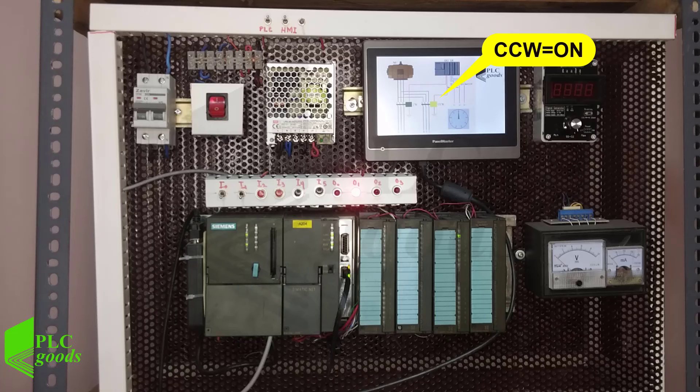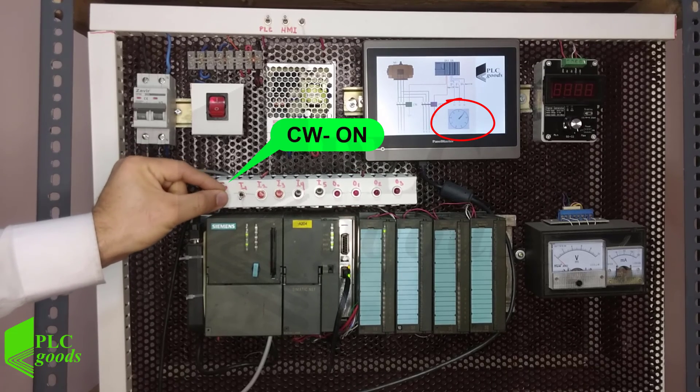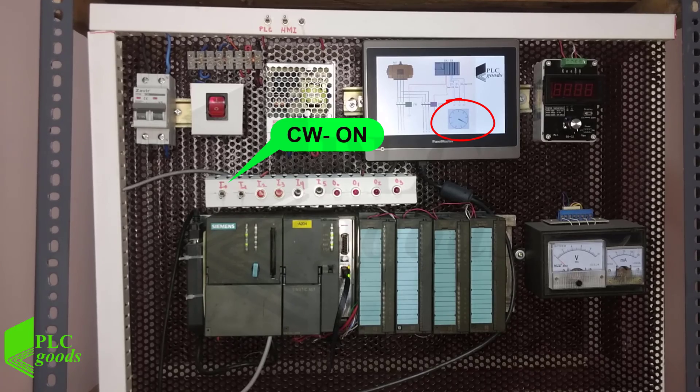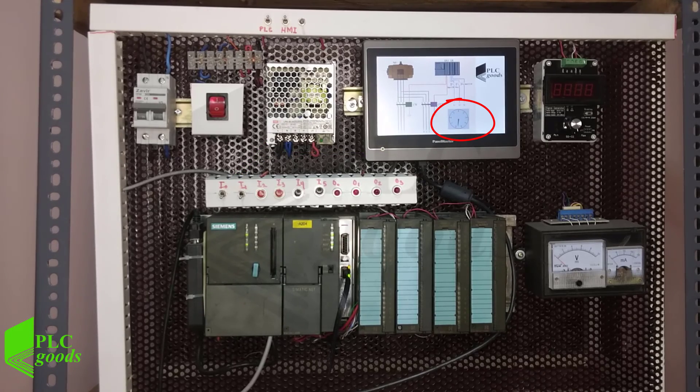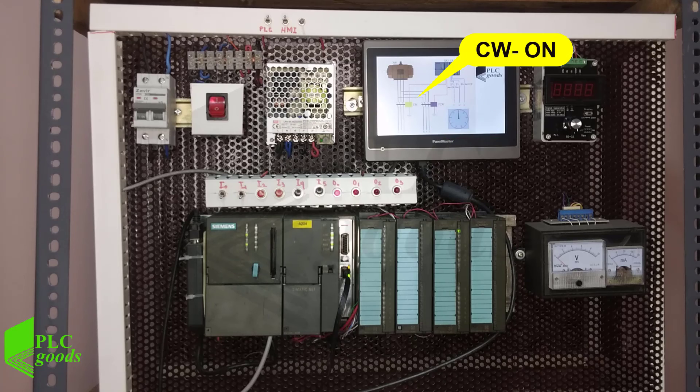While the motor is on in counterclockwise direction, I depress PB1. Then, the counterclockwise contactor turns off, and after a 10-second delay, the motor restarts in clockwise direction.